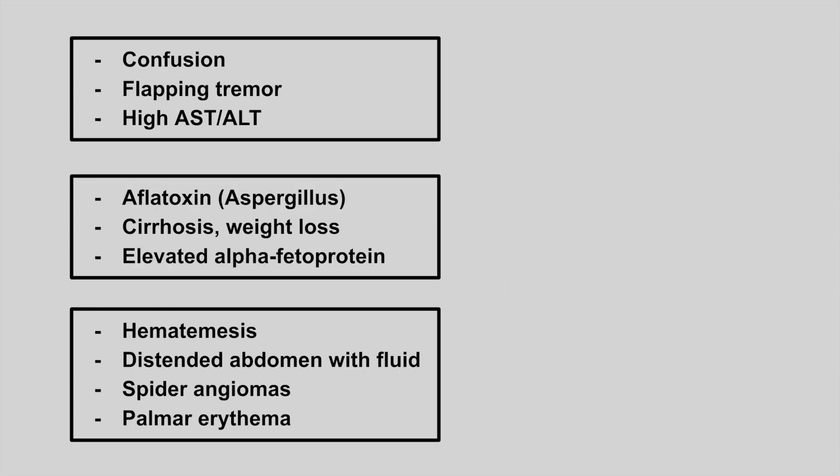The next patient has confusion and flapping tremors with a high AST and ALT level. This is going to be hepatic encephalopathy.